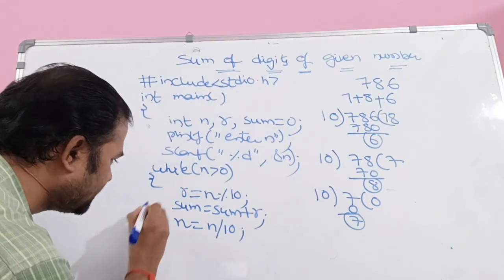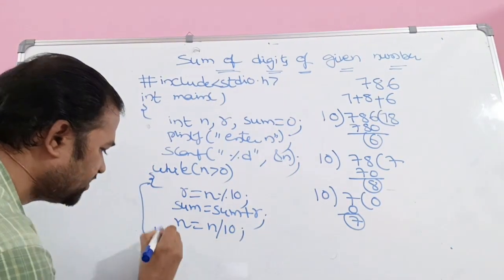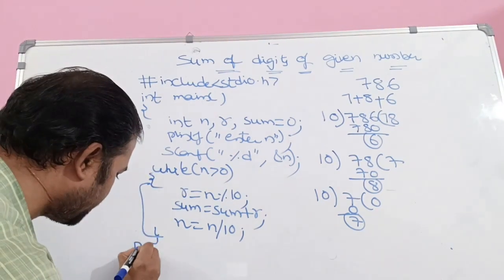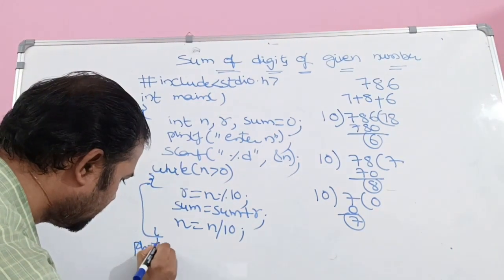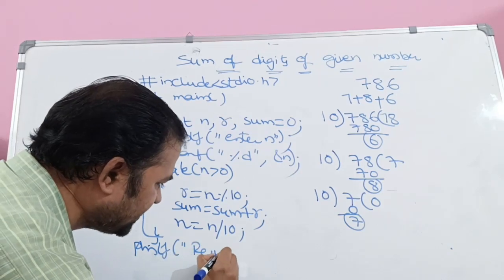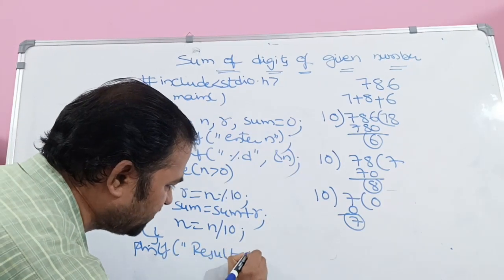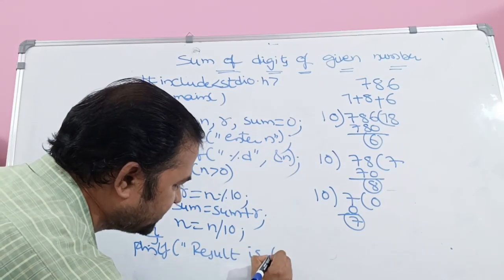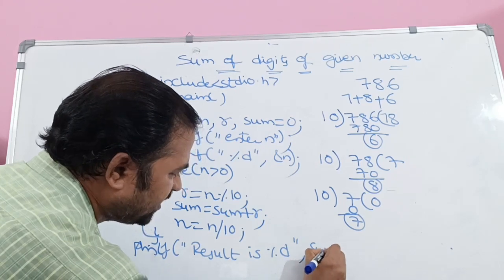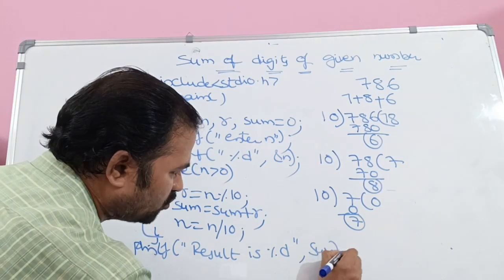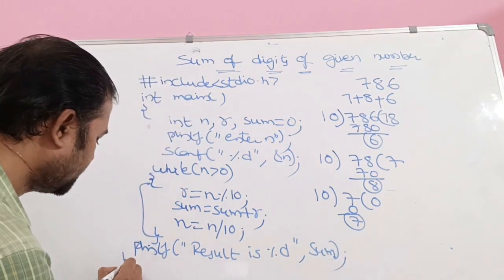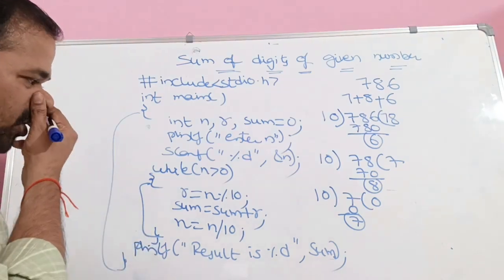When the condition falls false, we display the sum using printf. The format specifier for integer is %d, and the result is stored in sum, so we print sum. Then we close the main function. Now let us trace through the program once.